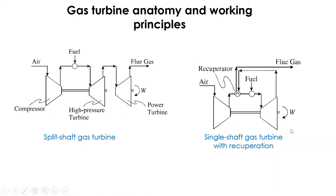On the right-hand side, you see the single shaft gas turbine with recuperation. In this type of gas turbine, the expander gas can be discharged directly to the atmosphere.